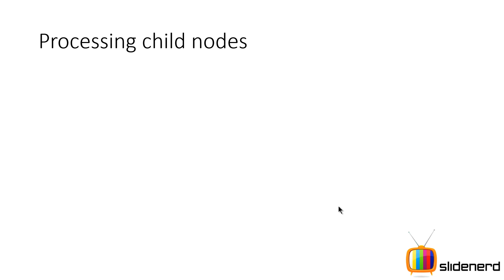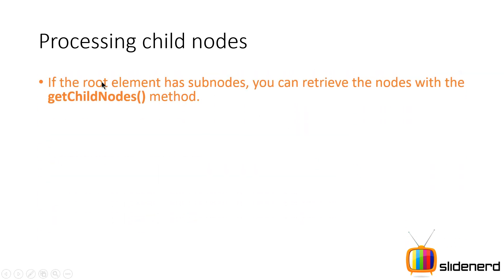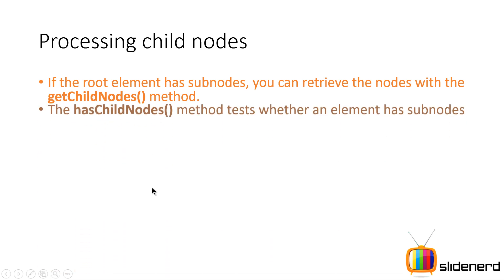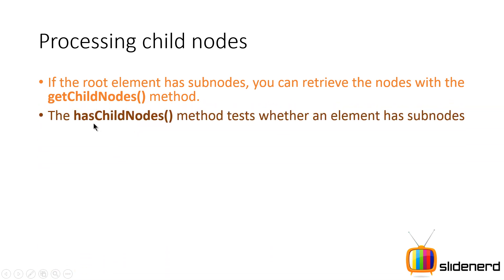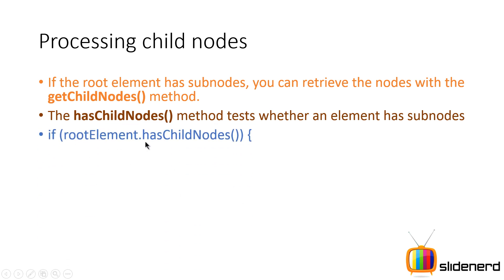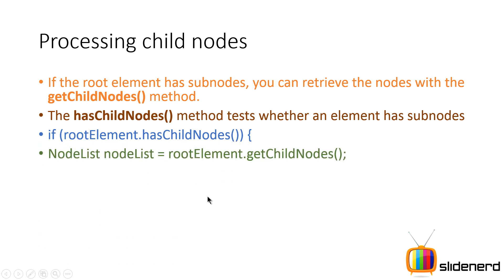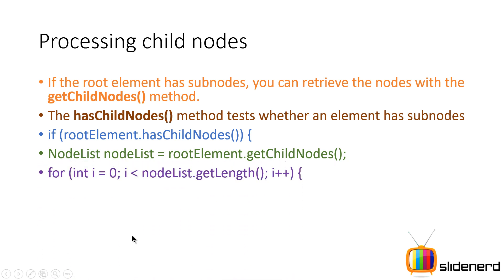Now let's take a look at processing child nodes. If the root element has child nodes, they can be retrieved with getChildNodes(). First you have to check if it has children or not using hasChildNodes(). So: if rootElement.hasChildNodes() is true, then only we process by calling rootElement.getChildNodes().